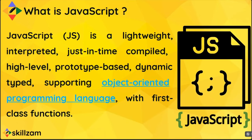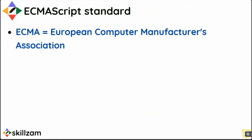For any programming language, there is a standardization — like ANSI has a standard for C. In the same way, JavaScript follows something called the ECMAScript standard. ECMA stands for European Computer Manufacturers Association. This organization has put forward a standardization called the ECMAScript standard. ECMA International is a non-profit organization that sets this standard.